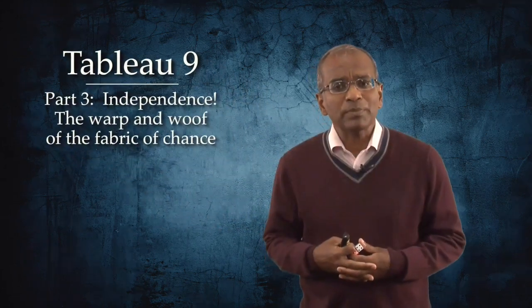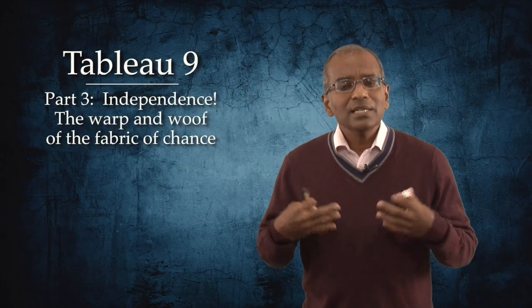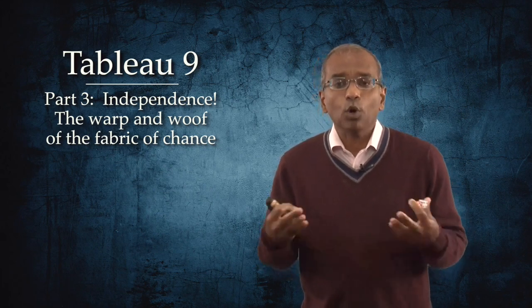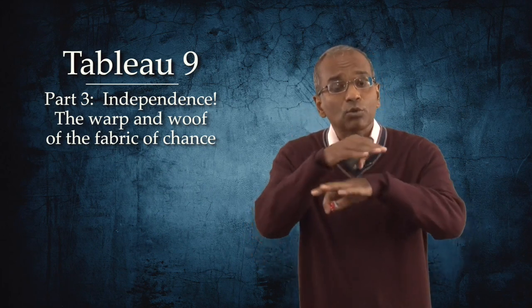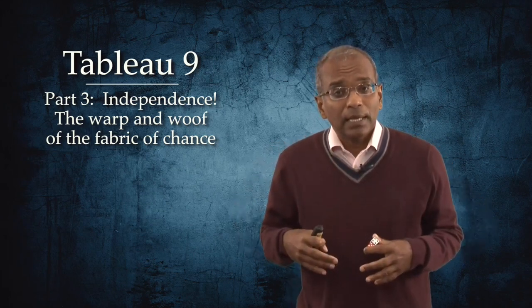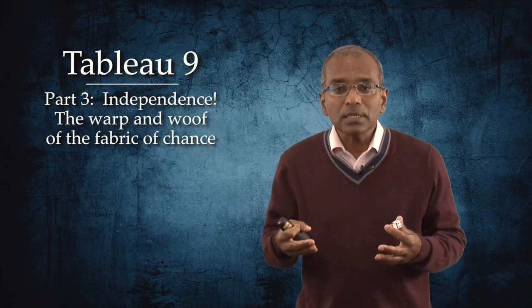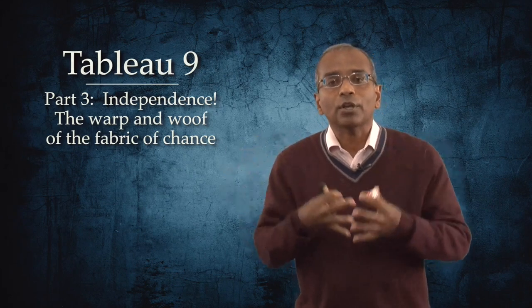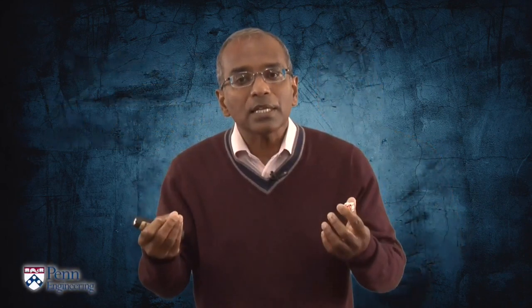I am being a little whimsical here, indulging in a metaphor from fabrics and textiles. The warp and the woof refers to the threads that run across a fabric. And in a very real sense, the idea of independence is a skein or a thread that runs through the entire theory of chance. Understanding independence properly opens a door into manifold applications and a richer understanding of the theory.